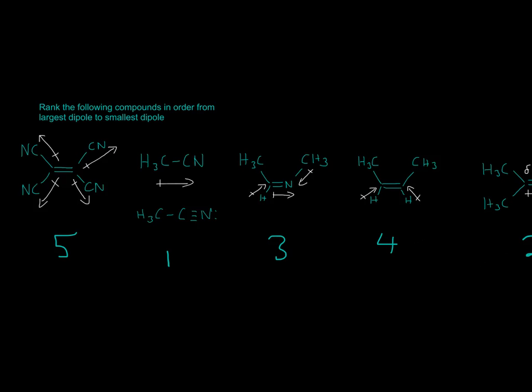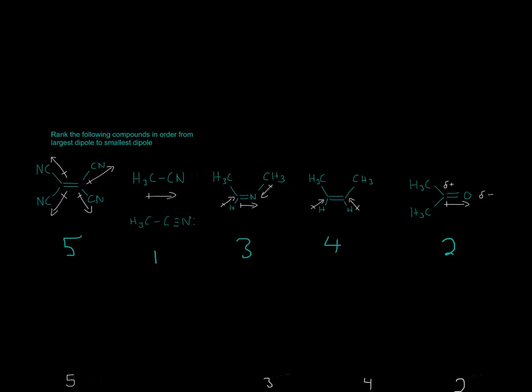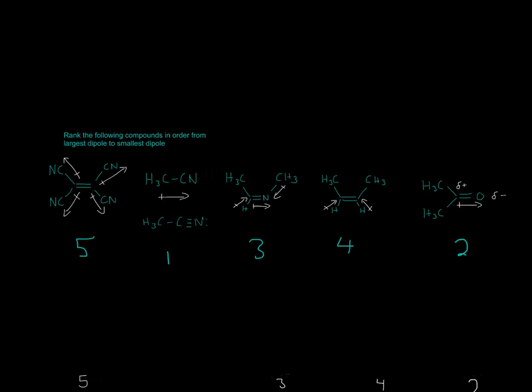So, that's the order of this problem. So, it'll be 5, 1, 3, 4, 2. And, because it said, from the largest to the smallest dipole. So, this one will be the strongest because of the triple bond. This one will be the next strongest because of the oxygen. This one, because it has nitrogen and nothing cancels it out. This one, because nothing cancels out these vectors. And, finally, this is the weakest because all of its vectors cancel each other out. So, I hope that helped, and thanks for watching.